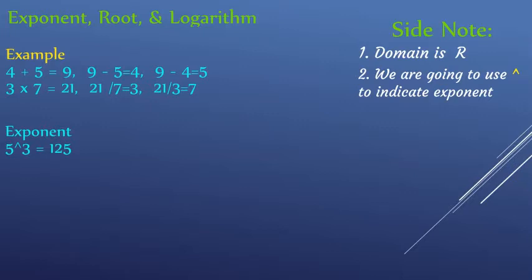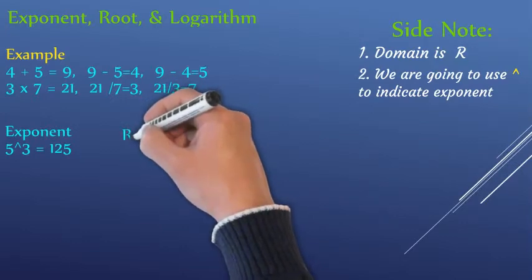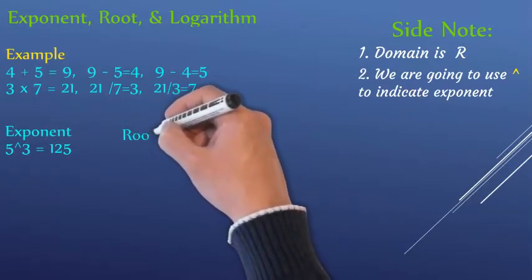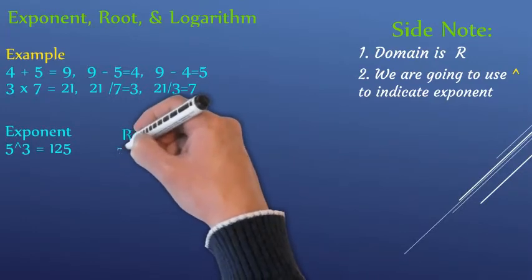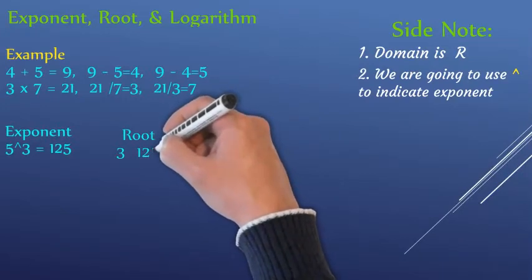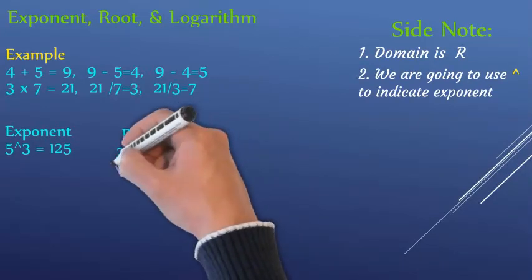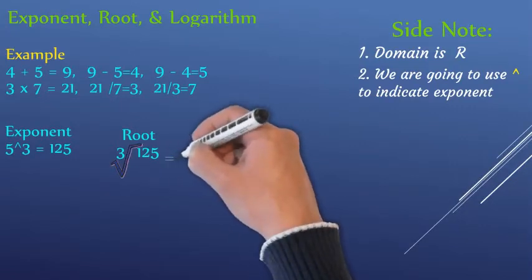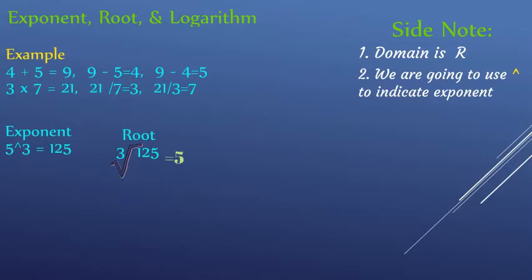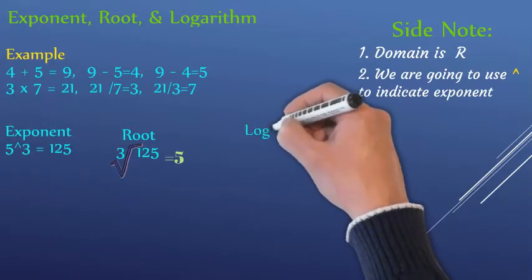Let me tell you: if I have five to the power of three, that gives us 125. The cube root of 125 — if they ask you the cube root of 125, you know that's five.